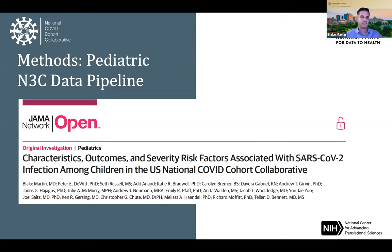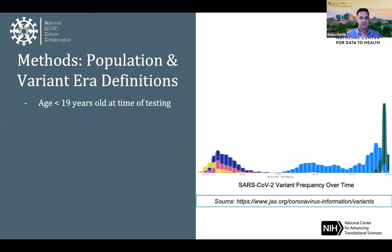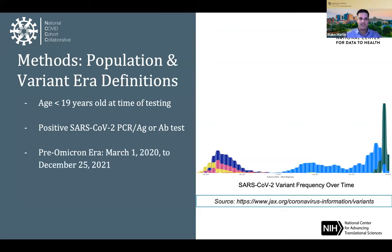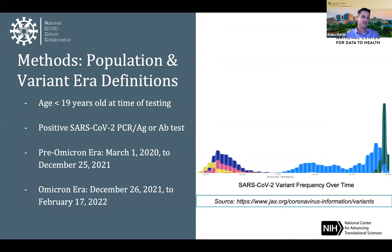We leveraged a pipeline similar to the N3C Peds Cohort project, looking at patients under 19 years old at the time of their first SARS-CoV-2 test who had a positive PCR, antigen, or antibody test. The pre-Omicron era was defined as March 1, 2020 through December 25, 2021, and the Omicron era as on or after December 26, 2021 — the point at which CDC variant sequencing showed Omicron became the predominant variant.